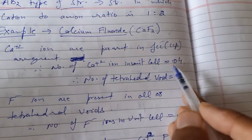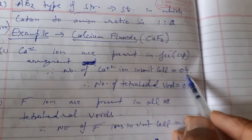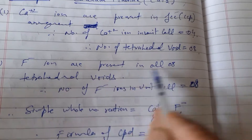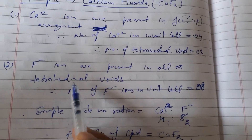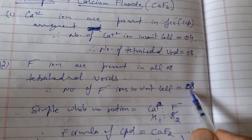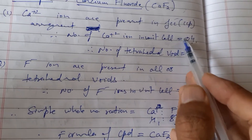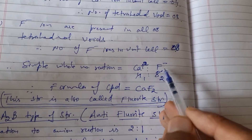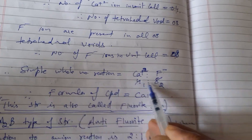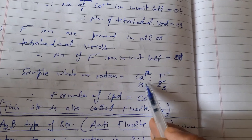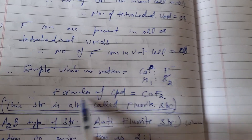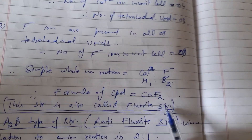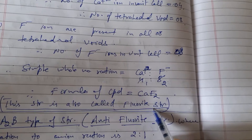The number of calcium ions in the unit cell is four, since FCC gives z = 4. The tetrahedral voids are double, giving eight. Fluoride ions are present in all eight tetrahedral voids, so the number of fluoride ions in the unit cell is eight. The ratio of calcium to fluoride ion is 4:8, simplifying to 1:2. Therefore the formula of the compound is CaF₂. These types of structures are called fluorite structures.